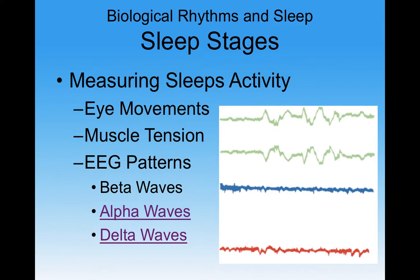Looking at sleep activity, we measure not only brain waves through EEG, but also eye movements. Rapid eye movement is exactly what it says — in REM sleep, our eyes dart around underneath our eyelids even though they're shut. We also look at muscle tension, which changes at different points of sleep, and EEG patterns. The key waves to know are beta waves, alpha waves, and delta waves, which we'll match to different sleep stages.